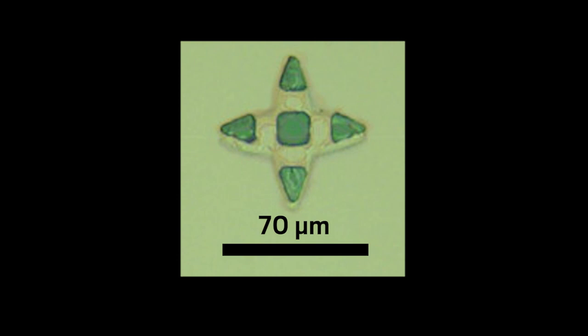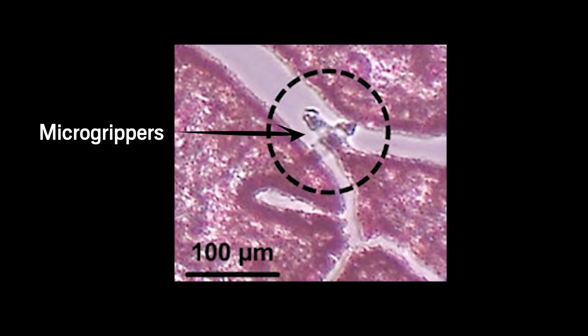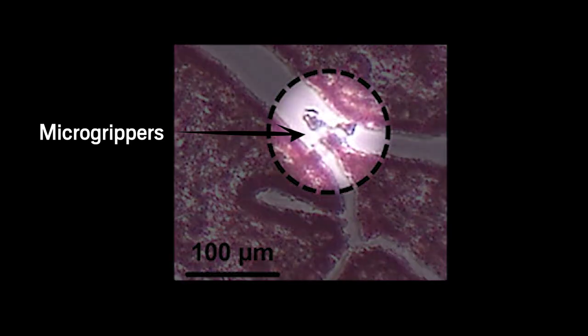Just 70 micrometers from tip to tip, these so-called microgrippers could come in handy as precision biomedical tools. For example, they could help doctors analyze disease tissue under a microscope at the cellular level.